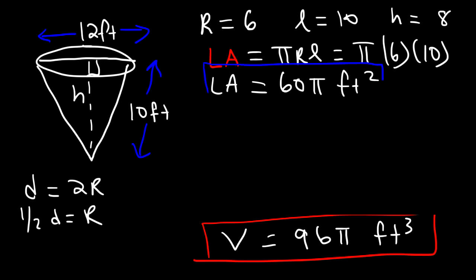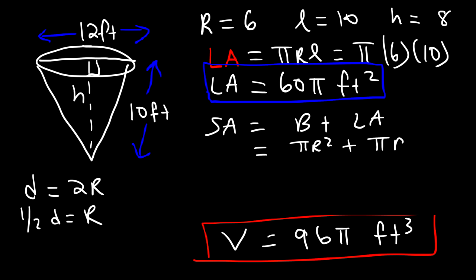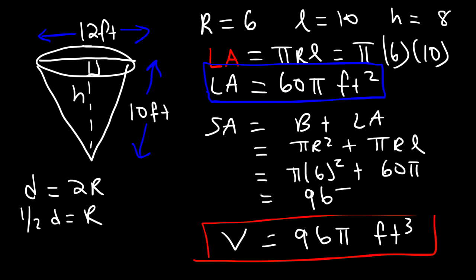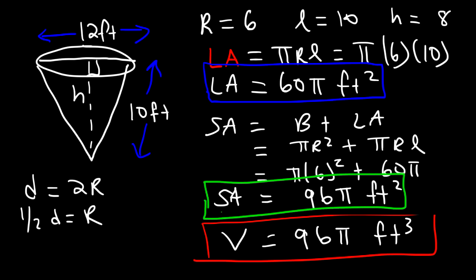The last step is the surface area: area of the base plus the lateral area, which is π r² + π r l. That's π times 6 squared plus 60π. 6 squared is 36, and 36 plus 60 is 96. So the surface area is 96π square feet. Note that the surface area and volume share the same numerical value here, but the units differ — square feet for surface area versus cubic feet for volume.